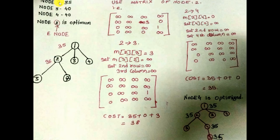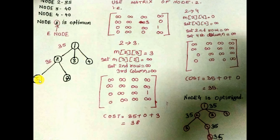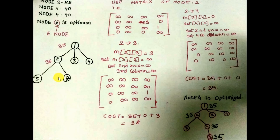We have now found: cost of node 2 is 35, cost of node 3 is 40, and cost of node 4 is 40. The least cost is 35, so node 2 is the optimum choice. Node 2 becomes the parent node, and from city 2 the salesman can either go to node 3 or node 4. We again find both costs and select the minimum route.